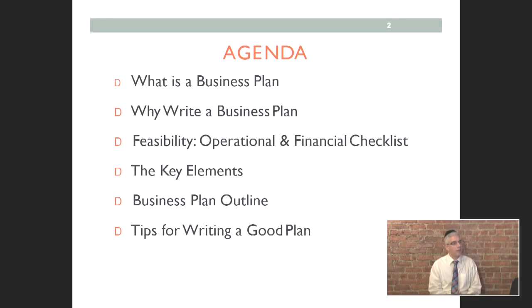After that, we'll do the actual business plan outline — the nine different components of the plan — and we'll outline each component and what we're looking for in terms of information. The last thing we'll discuss is tips for writing a good plan. An investor or reviewer sees many different types of business plans, so we want to give you some tips on making your plan stand out and pop, making a strong impression on the investor, lender, or reviewer. That's the agenda.